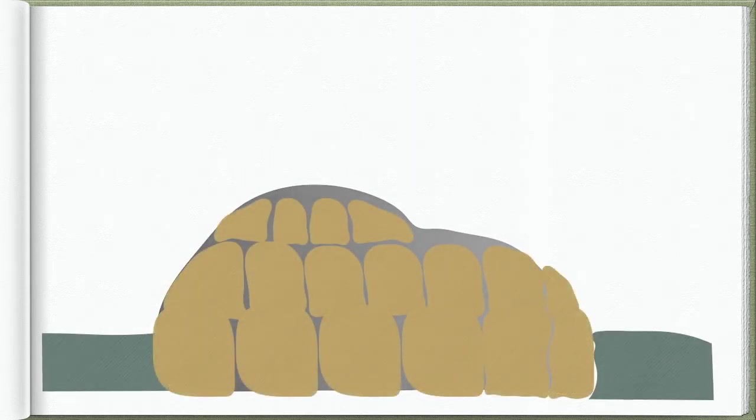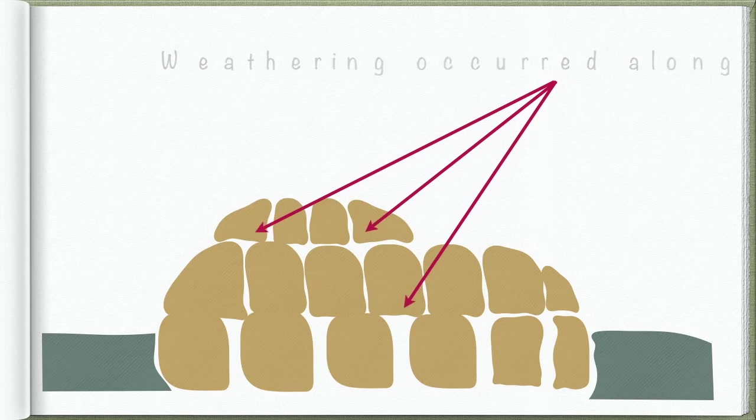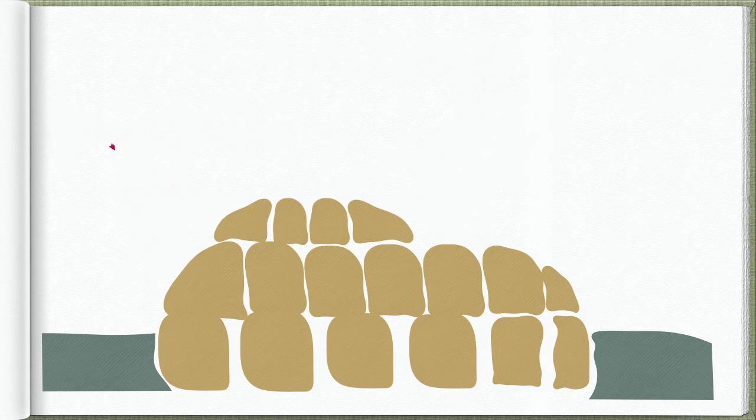And so when this batholith is then exposed to the surface, we now no longer see it as a solid batholith, but rather the material that is weathered is removed and we end up having core stones that balance on top of each other. And so there we have the tor forming.